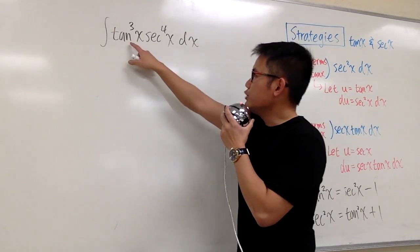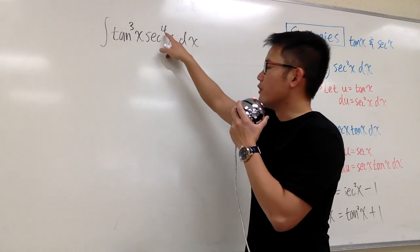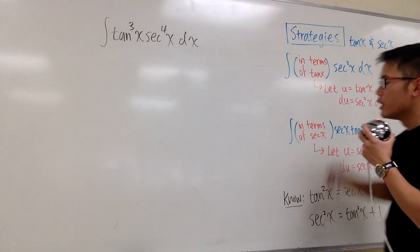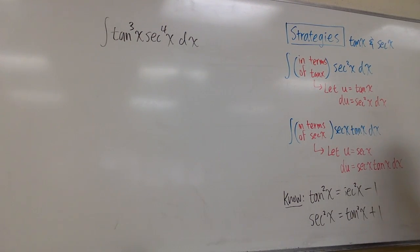Now let's integrate tangent to the 3rd power x times secant to the 4th power x. This time, which strategy do you think will work?